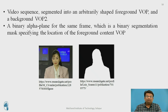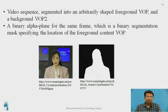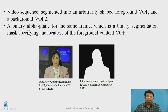As shown in the figure, the background is discarded in order to detect the video object. To extract the video object, the video sequence is segmented into an arbitrarily-shaped foreground VOP and a background VOP. A binary alpha plane for the same frame acts as a binary segmentation mask specifying the location of the foreground content within the VOP. In the figure, we can identify the object and the background separately.